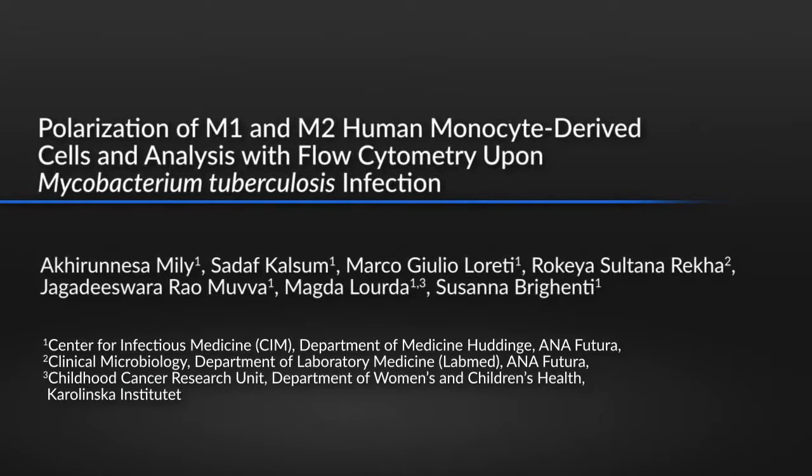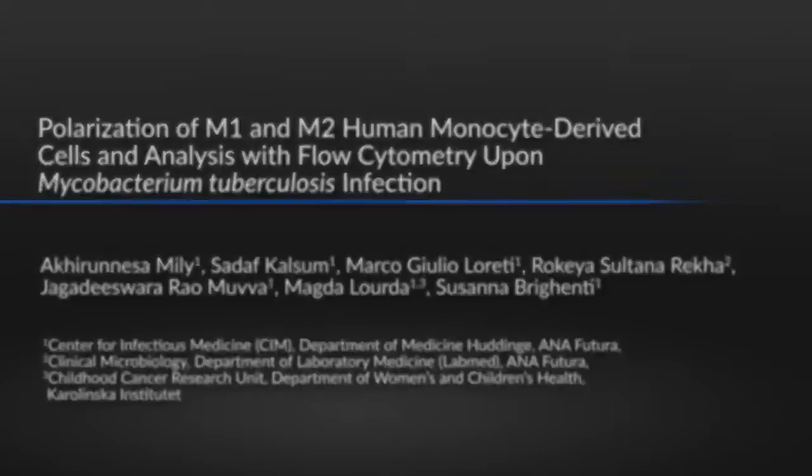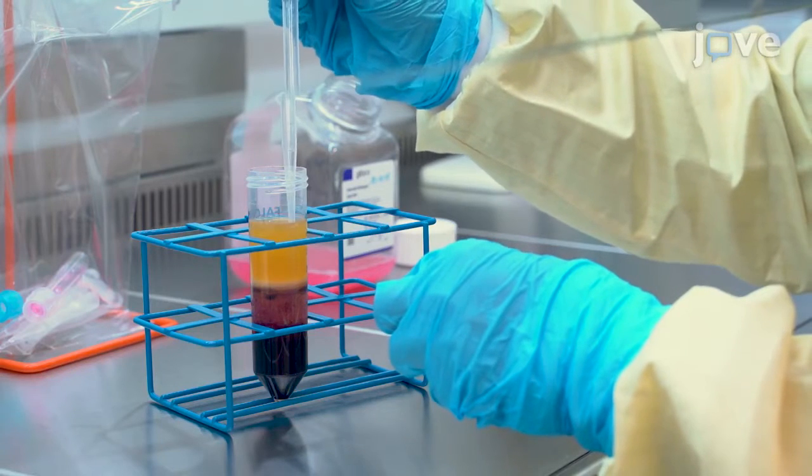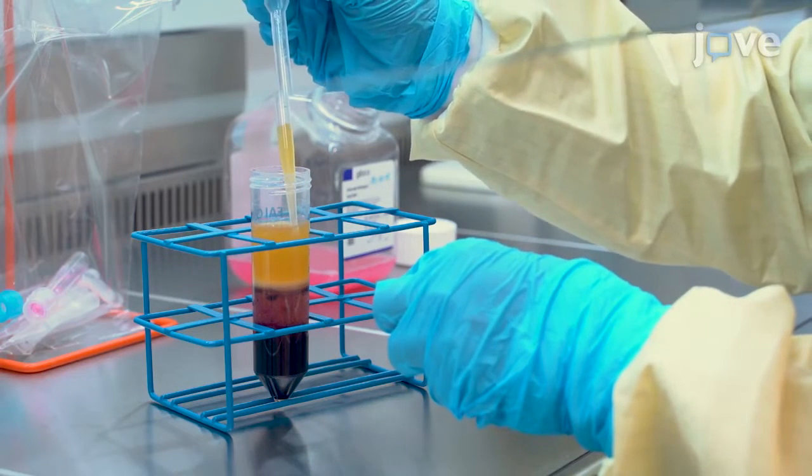This protocol offers the opportunity to follow immune polarization of human monocyte-derived cells based on visualization and deep characterization of green fluorescent protein labeled MTB in diverse macrophage subsets using 10-color flow cytometry. This represents an efficient and reproducible method